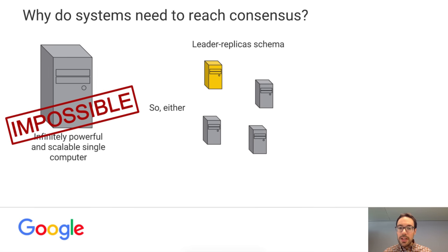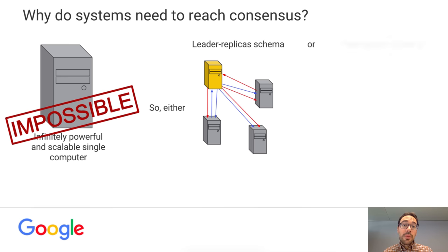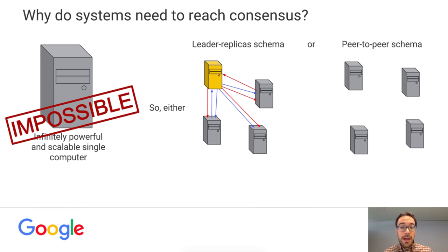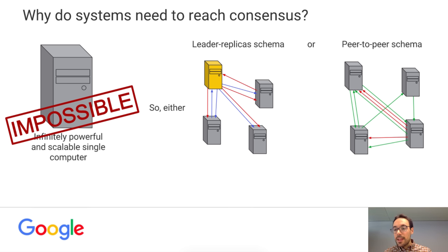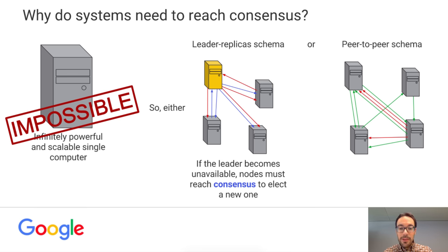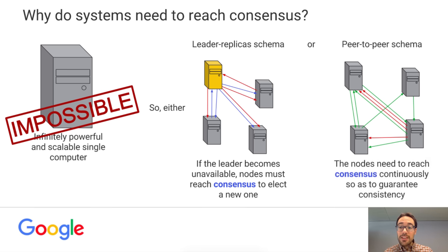Whenever someone wants to propose writing a value, they would talk to the leader. The leader would serialize the different proposals and send them to all the replicas so all the data would be written in all these nodes. Or you go for a peer-to-peer schema, in which all nodes are the same and behave the same. Whenever they want to propose a new value, they send the proposals to each other to agree on what is the next proposal to be accepted, so that everything is applied in the same order everywhere. In the first case, if the leader becomes unavailable, nodes must reach consensus to elect a new one, otherwise the whole system would be stalled. In the second one, the nodes must reach consensus continuously to guarantee consistency. In both cases, you need to reach consensus.